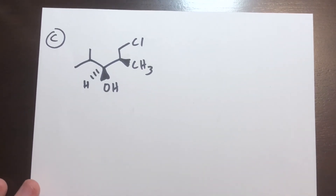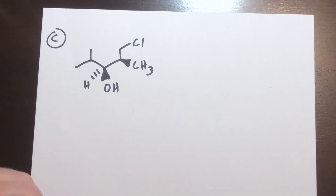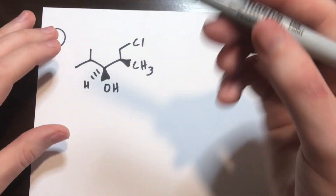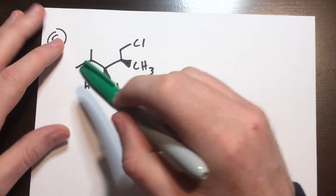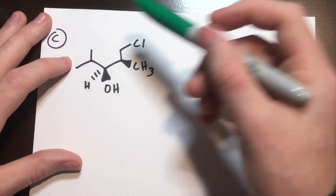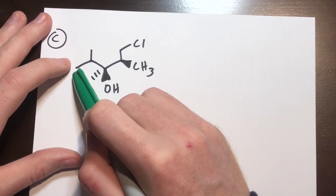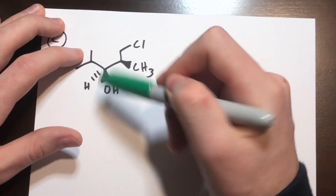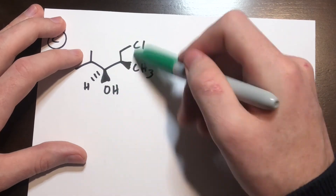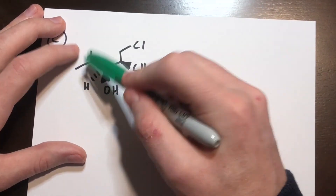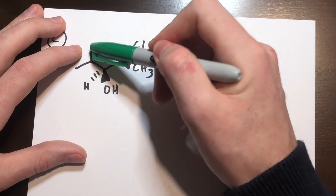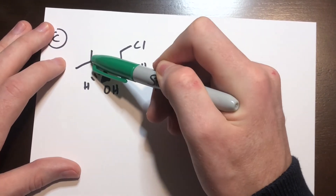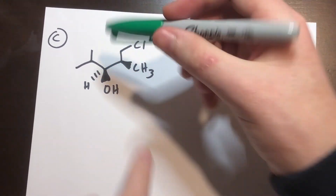Here we have another example. This molecule appears to have two chiral centers, so let's go through one at a time to confirm. We have a CH3 — that has three hydrogens, definitely not chiral. This is a CH group, and this whole group attached to this carbon is definitely different than the rest of it. But then we have a CH3 and a CH3 bound — those groups are the same. So this carbon is achiral.